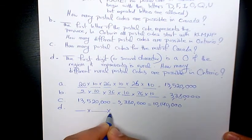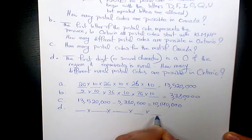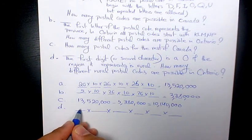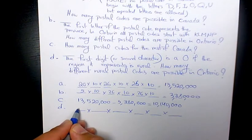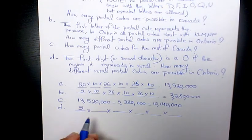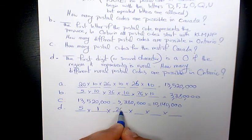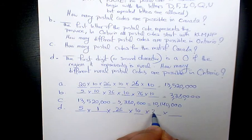So we have, again, six different slots and the first one is going to be five since Ontario starts with five letters. The second one has to be zero, so this is just one, there is no other option. And the rest of it is going to be 26, 10, 26, and 10.